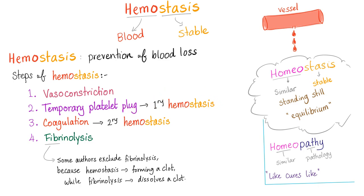Next, temporary platelet plug, also known as primary hemostasis — the hero here is the platelet. Then we have coagulation, or secondary hemostasis, where the heroes are coagulation factors secreted by the liver. Finally, fibrinolysis: after making a clot, dissolve it and maintain blood flow back to normal, restoring function.